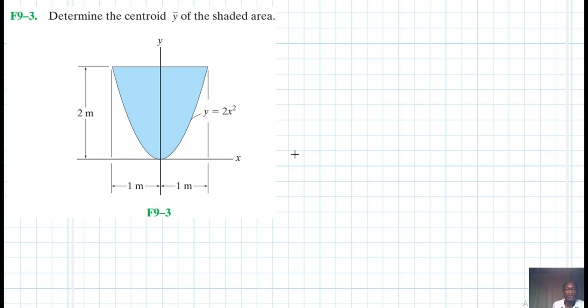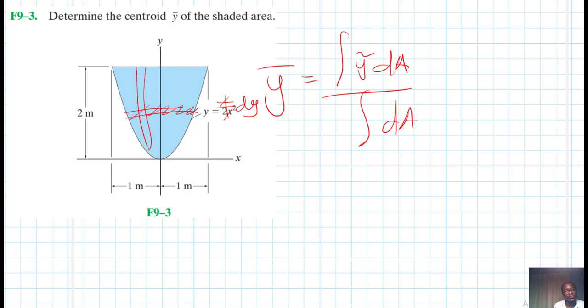So y-bar is just mathematically equal to integral y-count dA divided by integral dA. Right, so you can either use the horizontal strip or you can use the vertical strip.